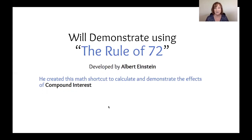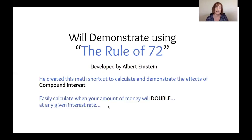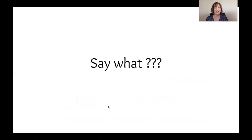I seriously use this almost every day. And once you figure it out, and it may take a bit, but I love this. So he created this math shortcut to calculate and demonstrate the effects of compound interest, how to easily calculate when your money will double at any given interest rate. So you take 72, divide it by your interest rate, and that's the number of years for your money to double. Say what? I know it's a little crazy, but I'm going to show you, and probably by the end of this example, you'll get it.